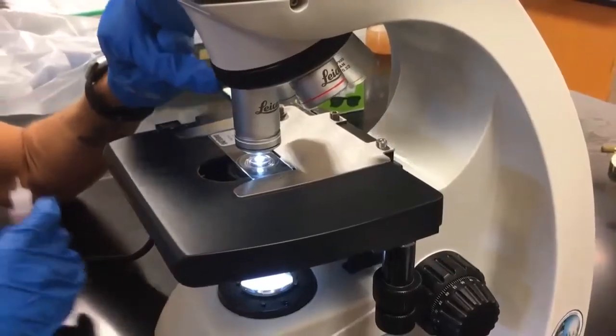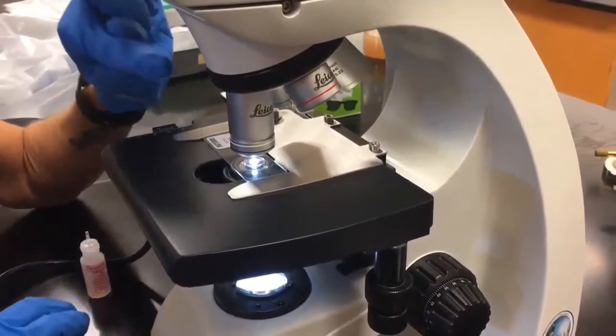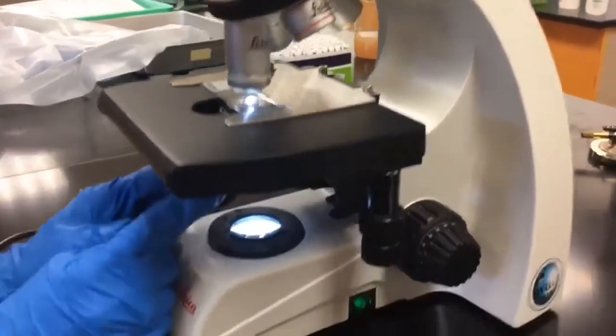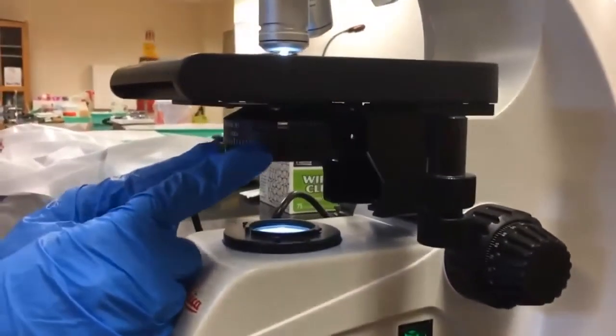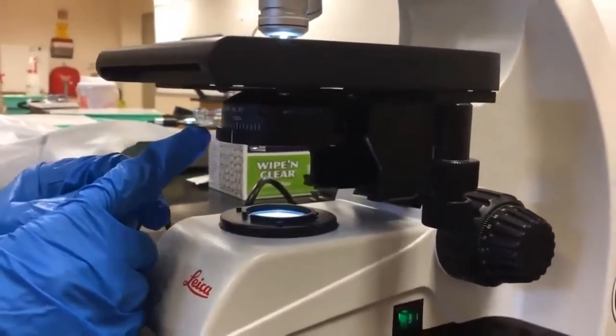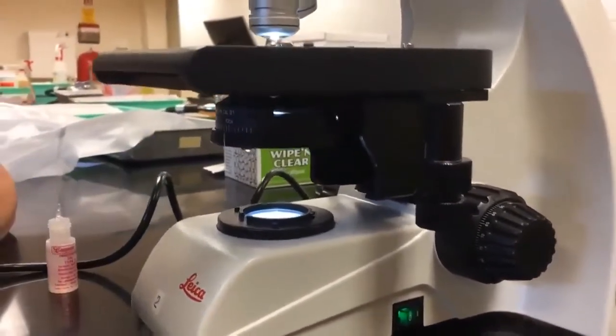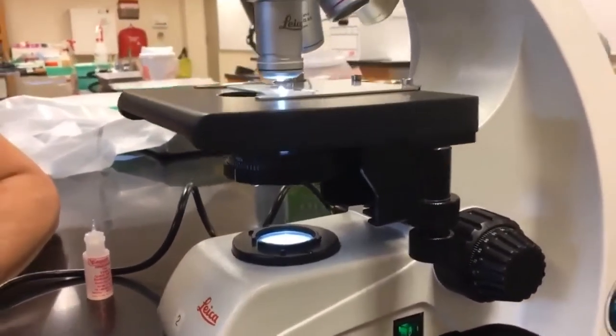Since we changed our lens, we also have to adjust our iris diaphragm down here. You're going to turn the knob until the line lines up with 100X. As we go up in magnification, we need to increase the intensity of light.